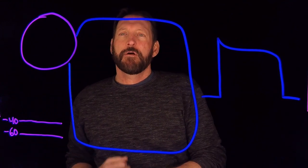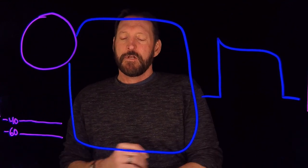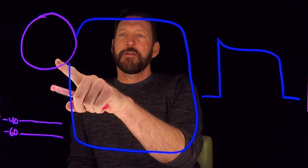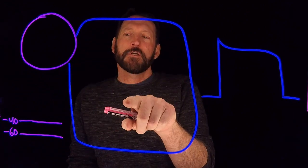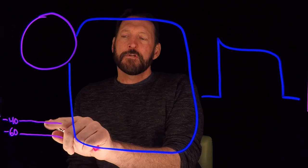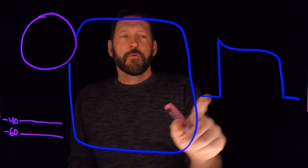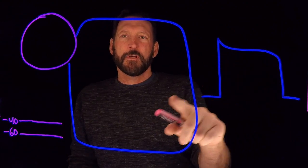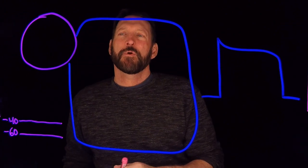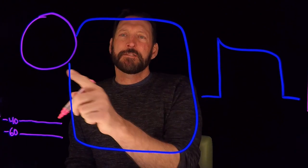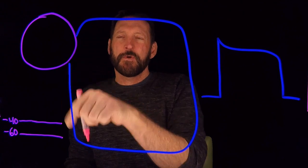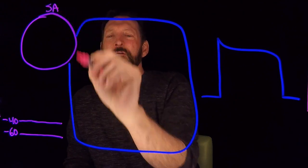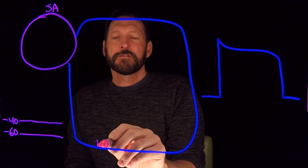We're going to talk about some cardiac physiology, looking at the cellular level. What I've got drawn here is the SA node and a cardiac myocyte. We're going to draw the waveform for the SA node and then the physiology for the cardiac cell. First, we're going to look at the different types of channels on the SA node.